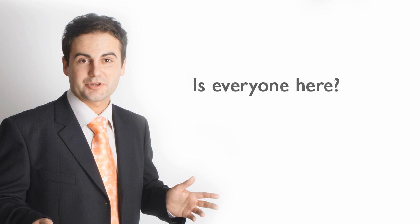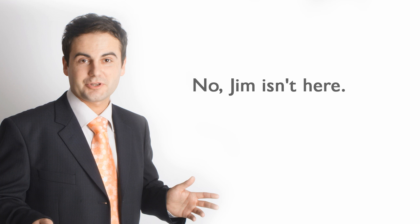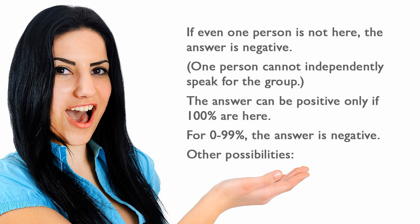'Is everyone here?' — 'Yes, we all are.' / 'No, Jim isn't here.' If even one person is not here, the answer is negative. One person cannot independently speak for the group. The answer can be positive only if 100% are here. For 0 through 99%, the answer is negative.